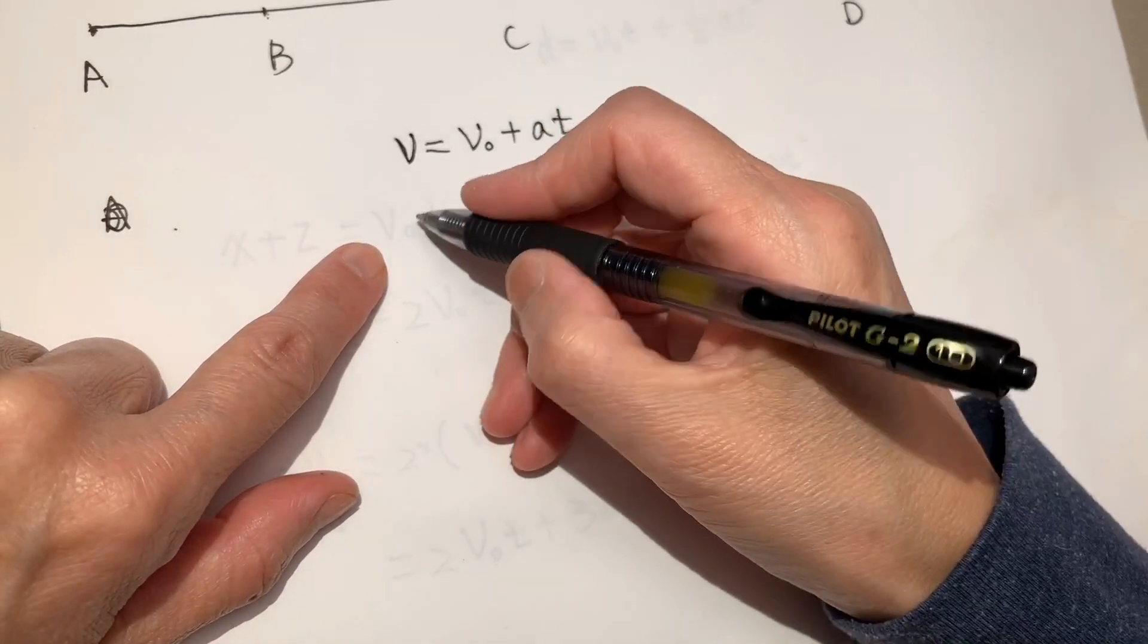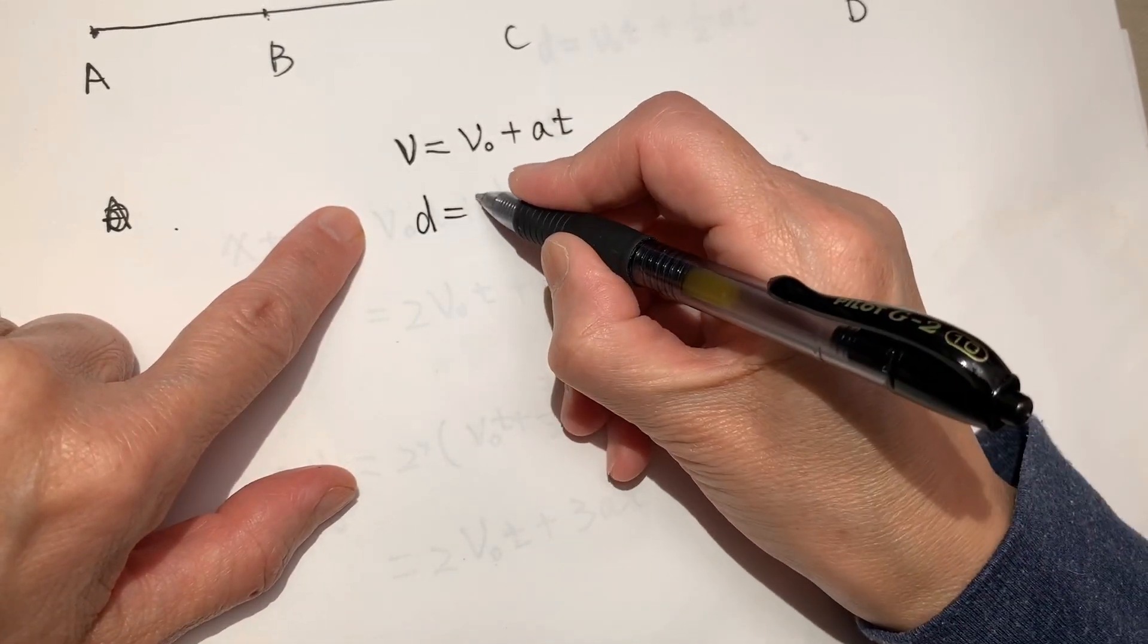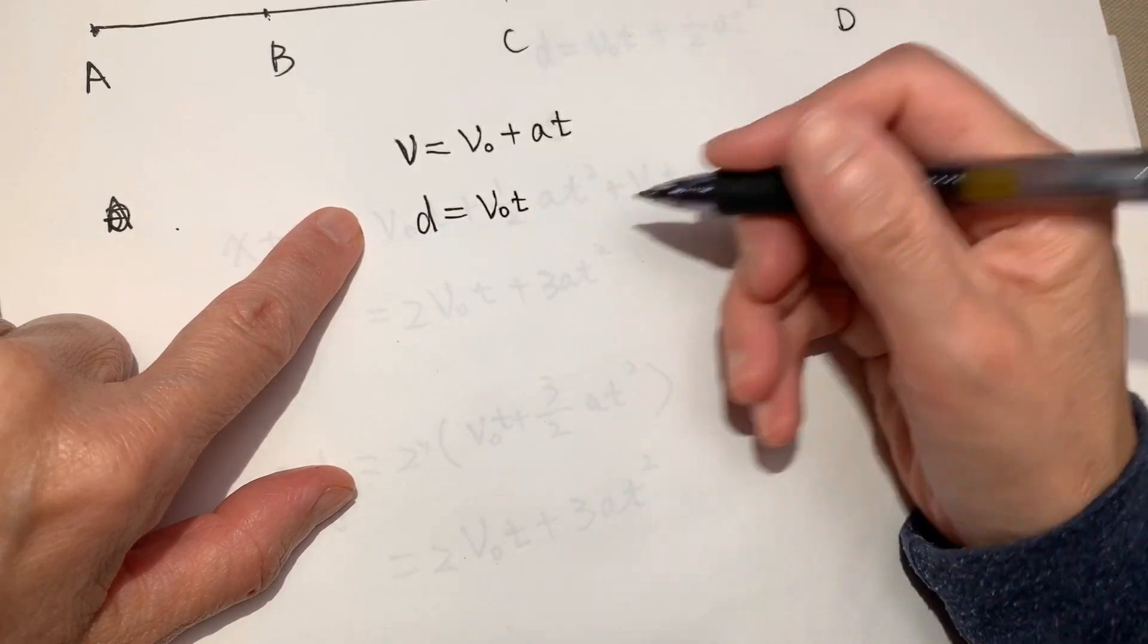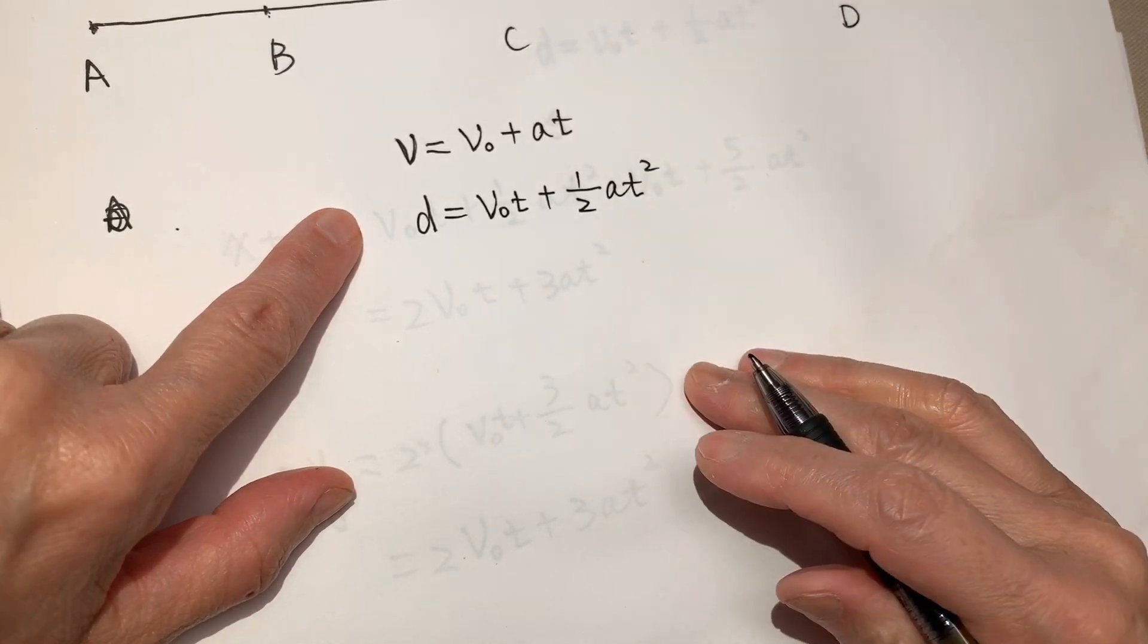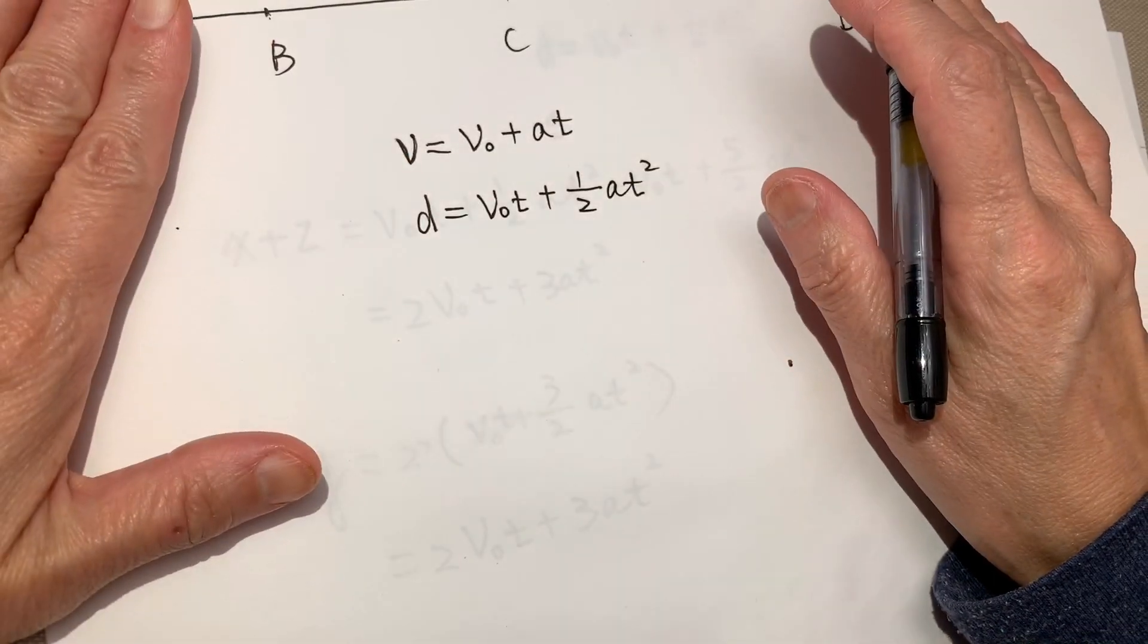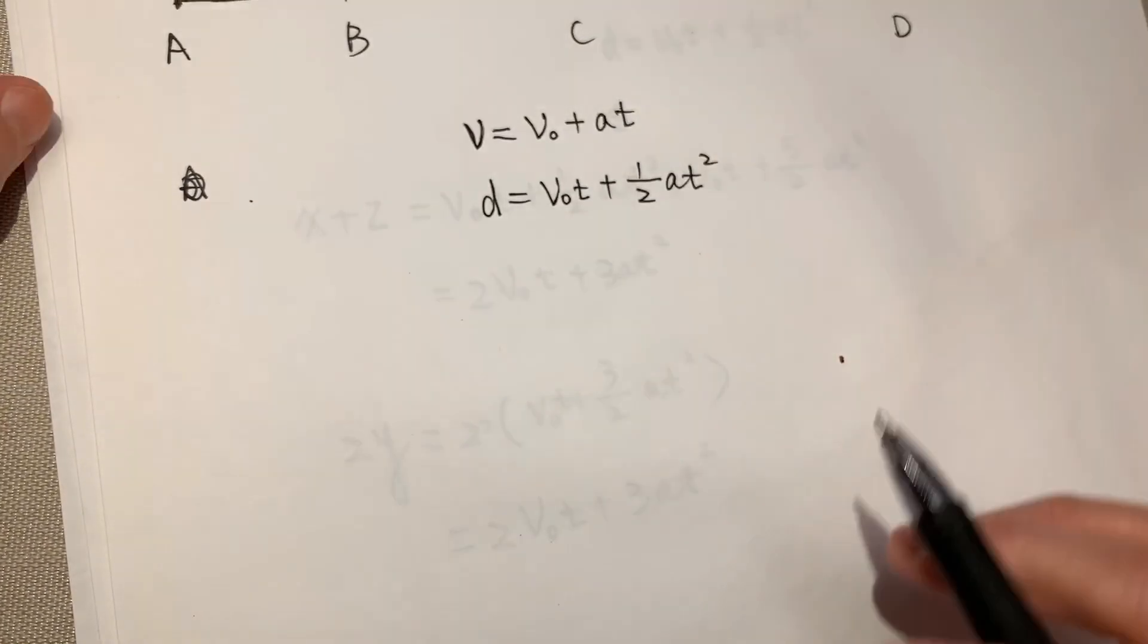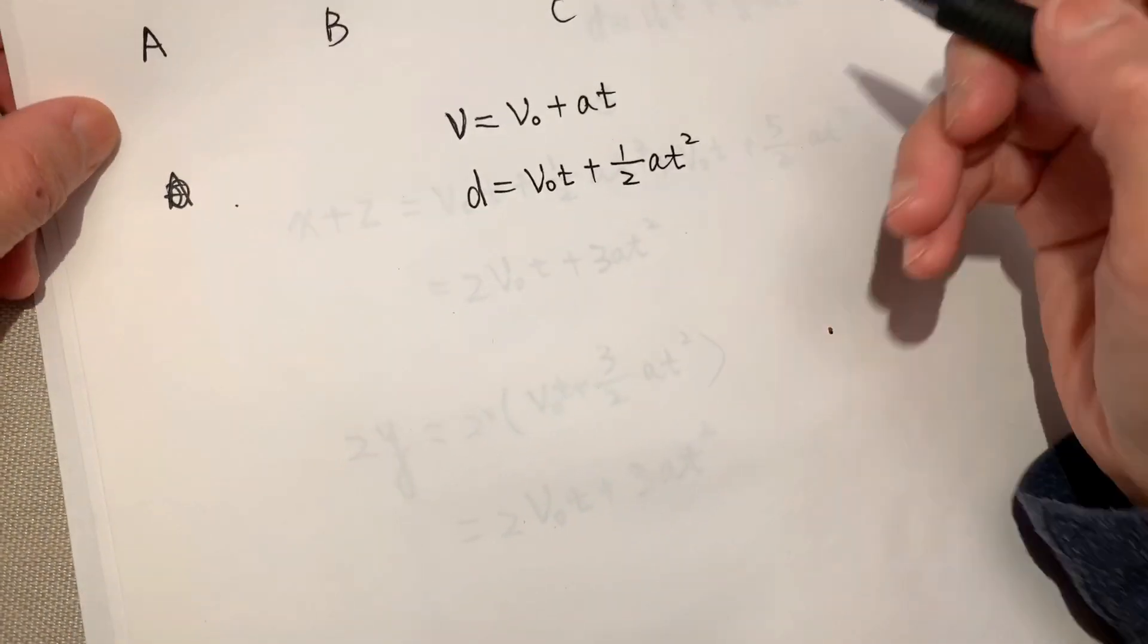And another one is distance formula. The distance equal to initial speed times time it used plus half A T square. Okay, so this A, this T are all generic and which used in our calculation is actually the same, same A and T.